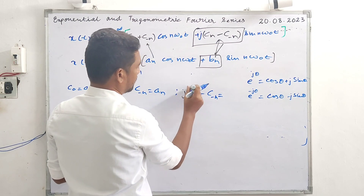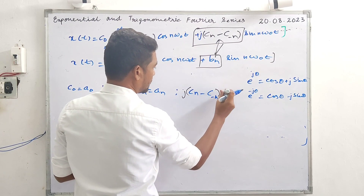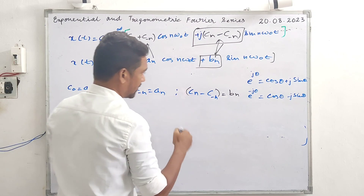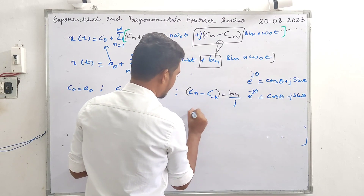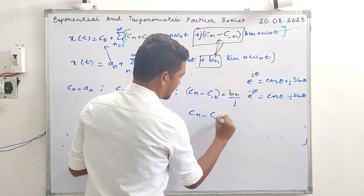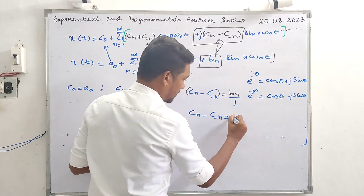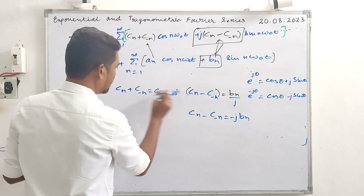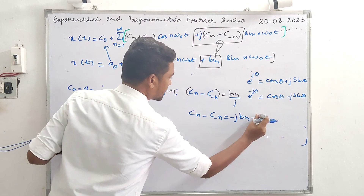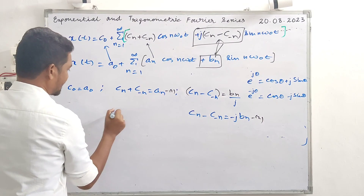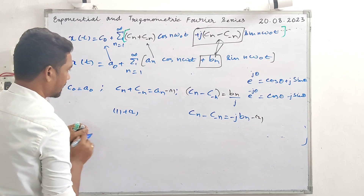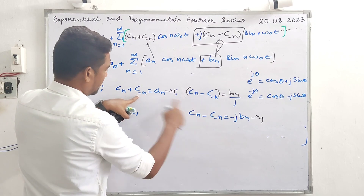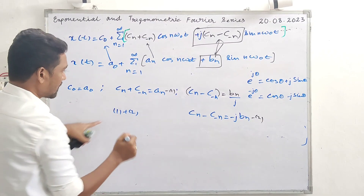So j times (c_n minus c of minus-n) equals b_n, meaning c_n minus c of minus-n equals b_n divided by j, which equals minus j times b_n. Call this equation 1: c_n plus c of minus-n equals a_n, and equation 2: c_n minus c of minus-n equals minus j b_n. Adding equations 1 and 2, c of minus-n cancels.